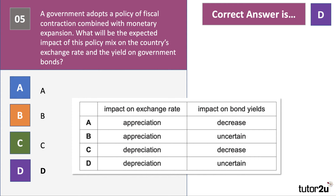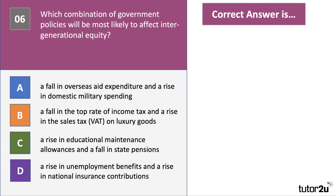What about the impact on bond yields? If the government's borrowing less, in theory the supply of bonds will be lower, the price of bonds would go up, and therefore the yield on bonds would go down. But it's by no means certain — particularly if there's a depreciation in the exchange rate, which might make overseas investors uncertain and demand a risk premium to buy the government debt. So we can't be certain what the impact on bond yields will be, and therefore the answer is D.